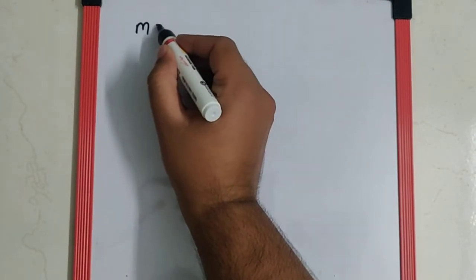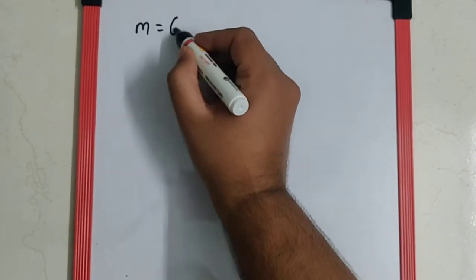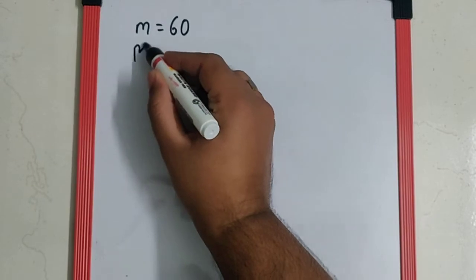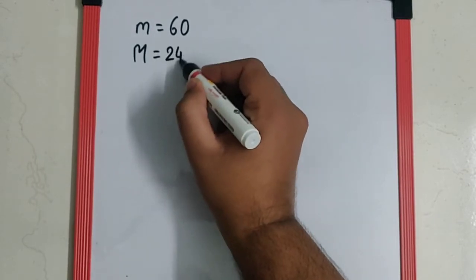The next question says, a man weighing 60 kg is standing on a trolley weighing 240 kg. The trolley is resting on frictionless horizontal rails. If the man starts walking on the trolley with a velocity of 1 meter per second, then after 4 seconds, his displacement relative to the ground is. The mass of the man is 60 kg and the mass of the trolley is 240 kg.